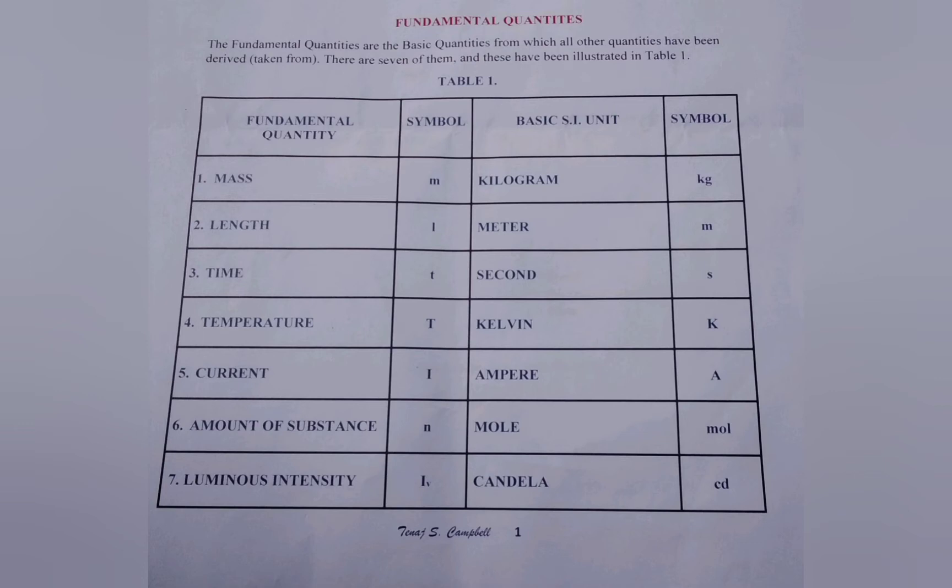Now analyzing this table in greater detail shows that mass is measured in kilograms and the symbol for the kilogram is kg. Length is measured in meters and the symbol for the meter is a common M. Time is measured in second and the symbol for the second is S.